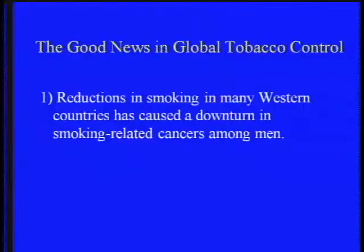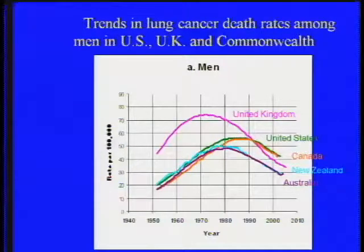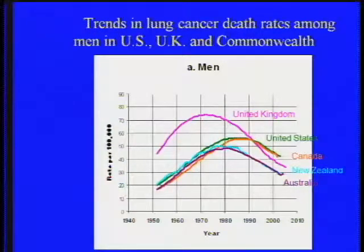There is some good news in global tobacco control. Reductions in smoking in many Western countries have caused a downturn in smoking-related cancers among men. This slide shows the downward trend in lung cancer death rates in the U.S., the U.K., and some Commonwealth countries. The decrease in the U.K. among men began earlier and is larger than most other countries except Finland. In the United States, the decrease in lung cancer death rates accounts for about 40% of the decrease in all cancer death rates.